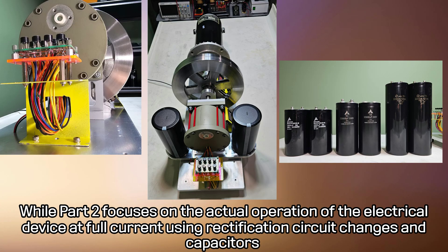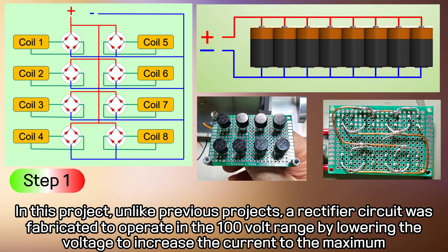While Part 2 focuses on the actual operation of the electrical device at full current using rectification circuit changes and capacitors. In this project, unlike previous projects, a rectifier circuit was fabricated to operate in the 100-volt range by lowering the voltage to increase the current to the maximum.